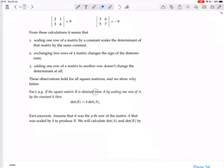If the square matrix B is obtained from A by scaling one row of A by the constant k, then the determinant of B equals k times the determinant of A. Multiply a row by a constant, that's the same as multiplying the determinant by a constant.